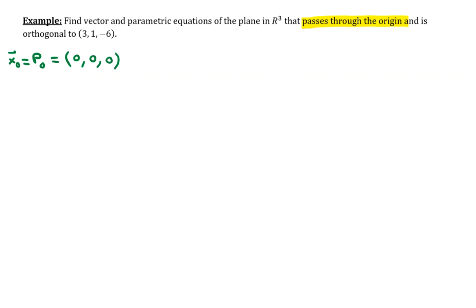But here's kind of the interesting second condition: our plane has to be orthogonal to this vector (3, 1, -6). That said, I definitely think a diagram is in order.